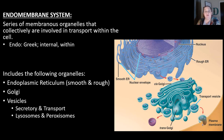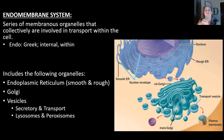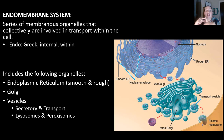This brings us to the endomembrane system — a series of membrane organelles that collectively are involved in transporting things in the cell. 'Endo' is Greek meaning internal or within the cell. This includes the endoplasmic reticulum, abbreviated ER, both smooth ER and rough ER, the Golgi complex or Golgi apparatus, and different kinds of vesicles. Vesicles can be secretory or transport vesicles, or specific vesicles like lysosomes and peroxisomes.